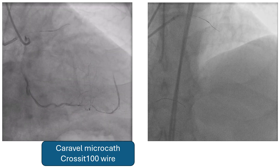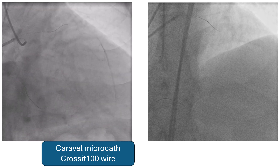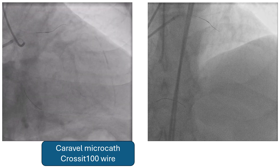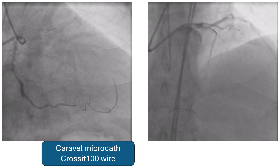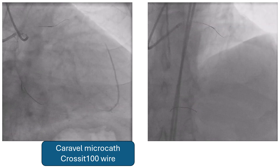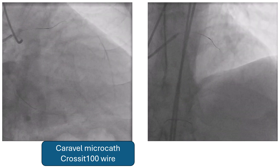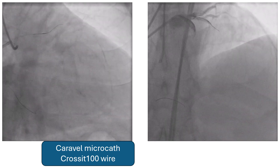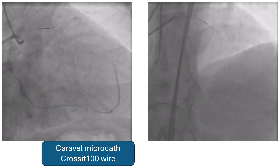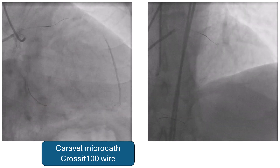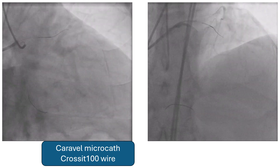We started with a Caravel microcatheter and a Cross 100 wire. This maneuver revealed another characteristic of the CTO, which is some tortuosity inside the lesion. It was difficult to cross the distal cap with the Cross 100.